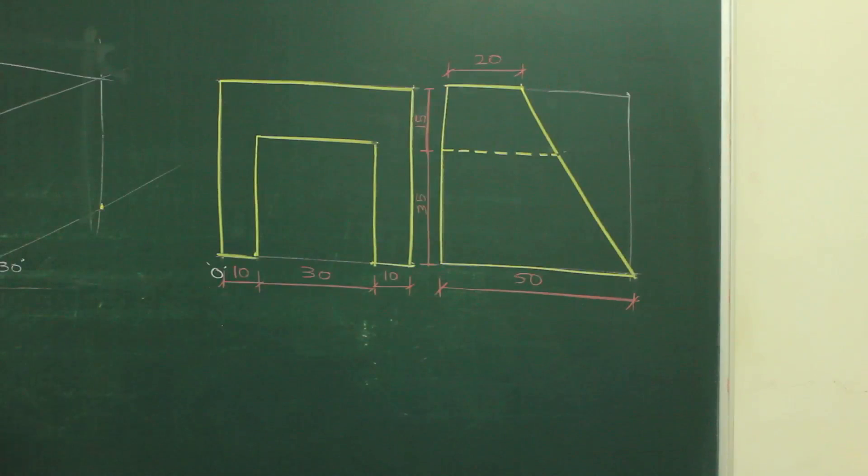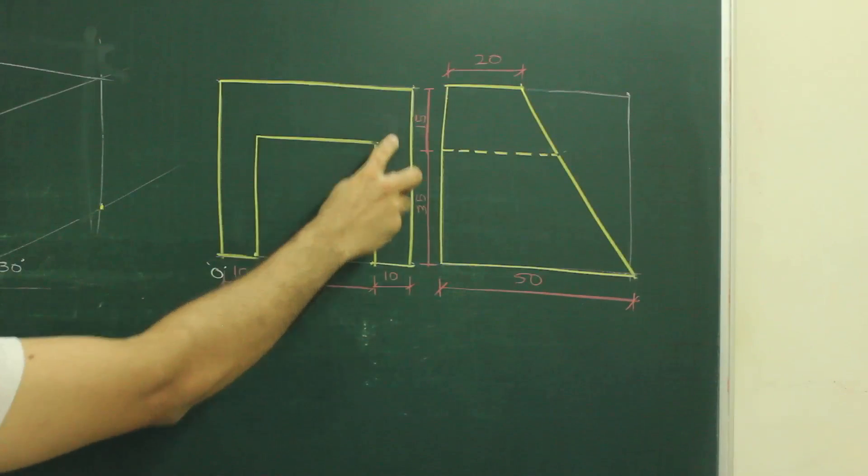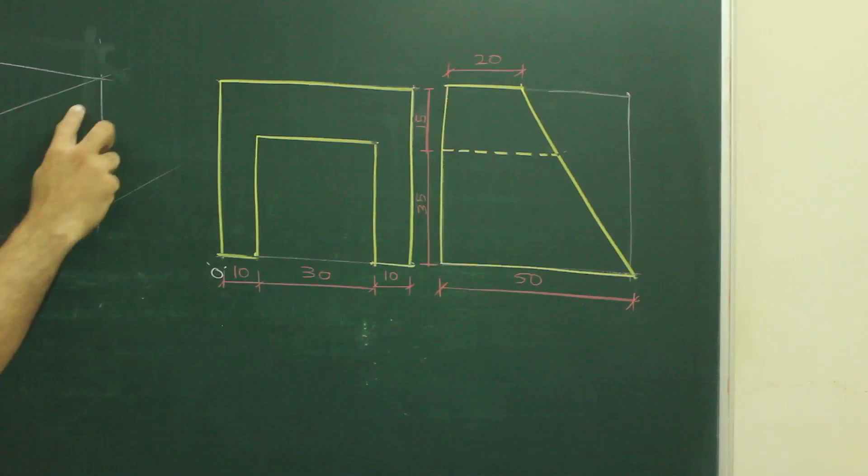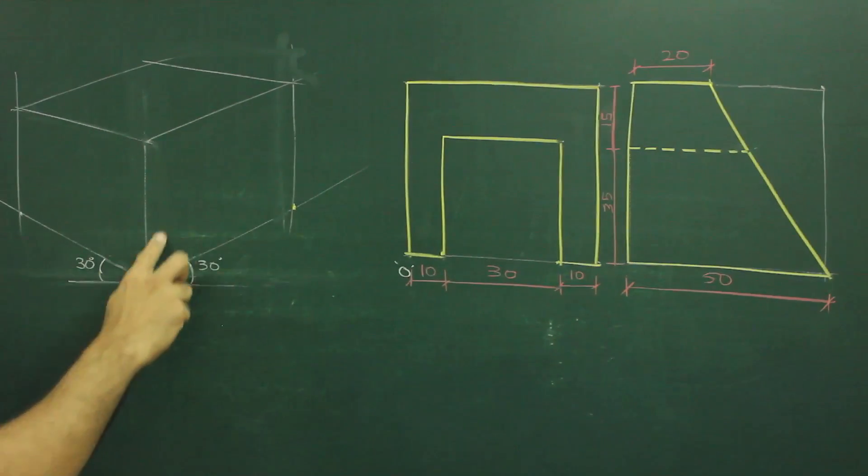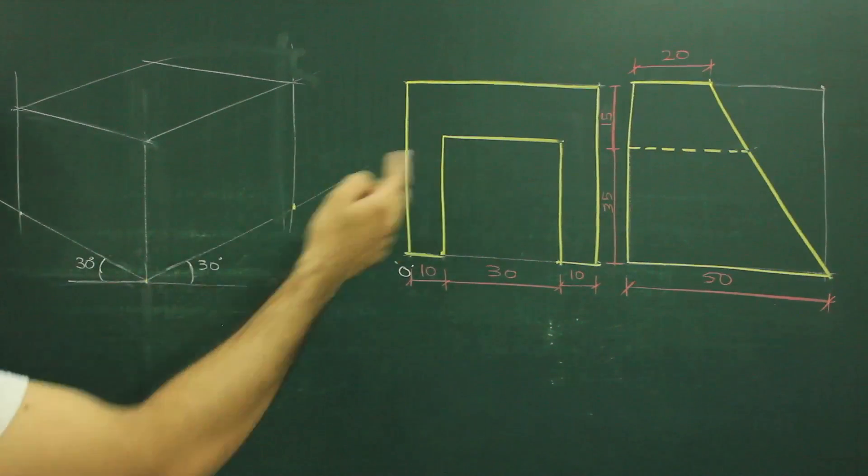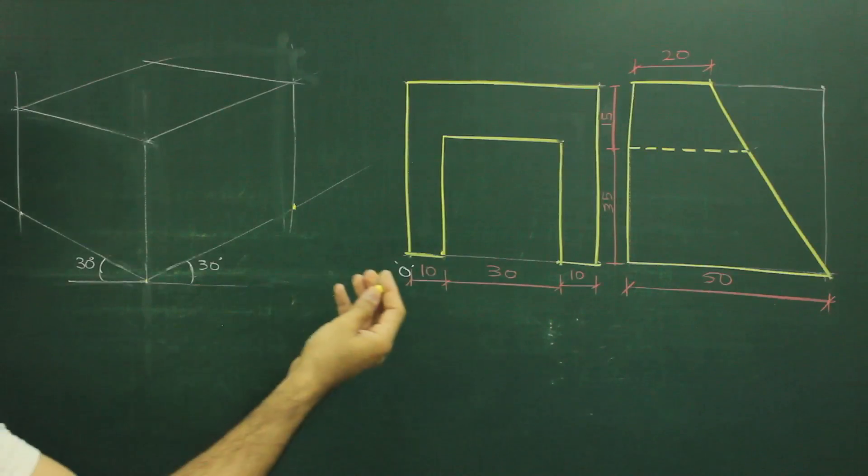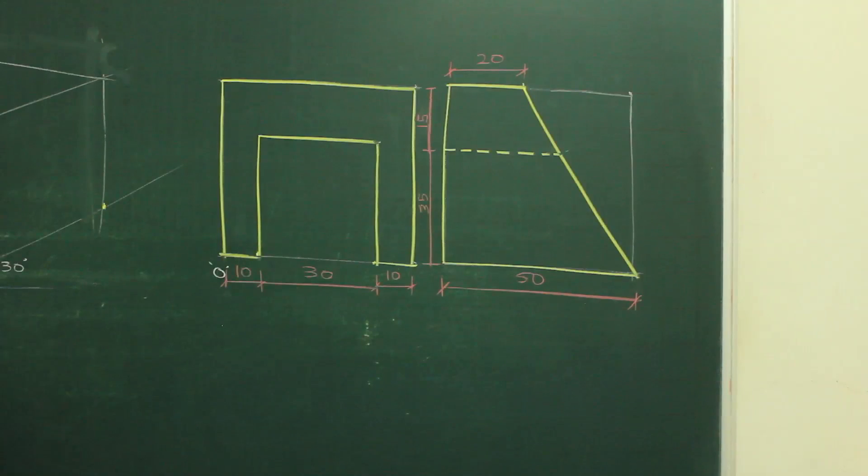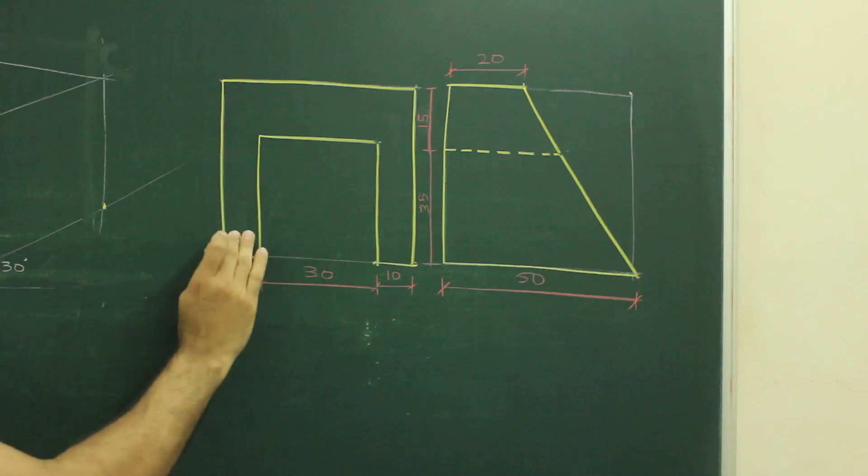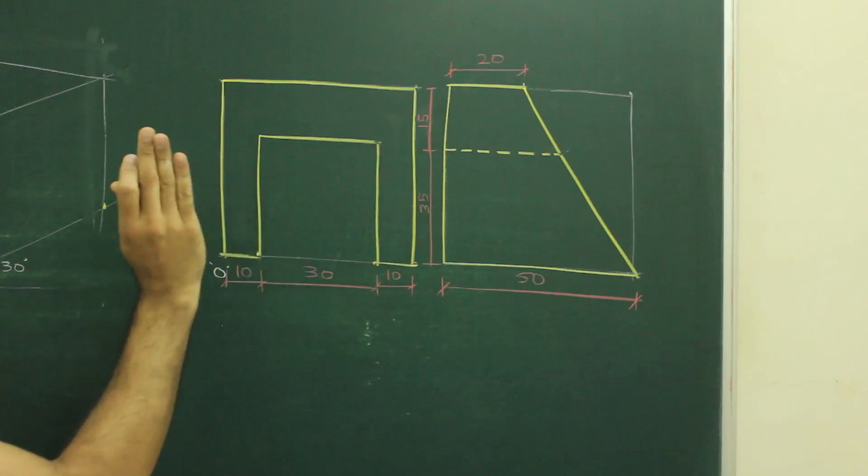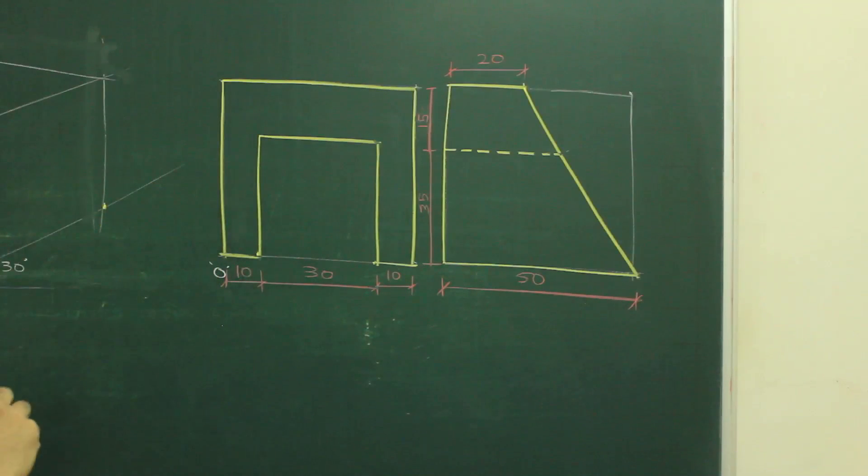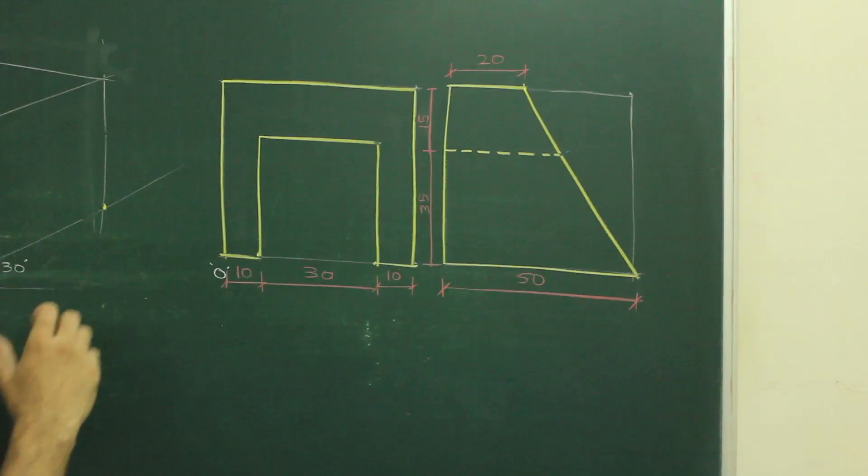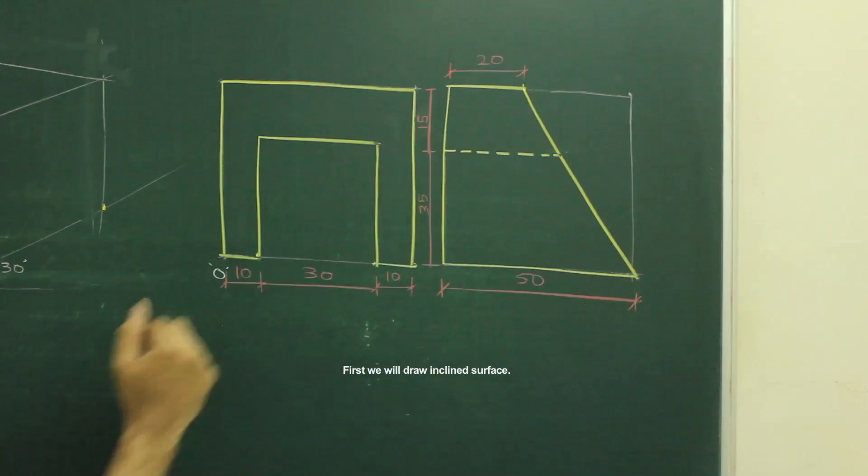Now which one I should draw first? Now if I draw this part in front view on this side, and if I see side view from this side its slope. There is a possibility that this is not straight, it is inclined. So what we need to do first, first we will draw inclined surface first.